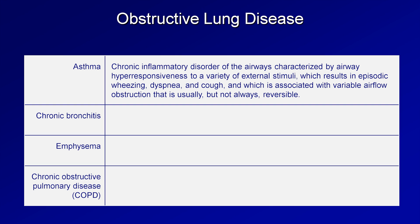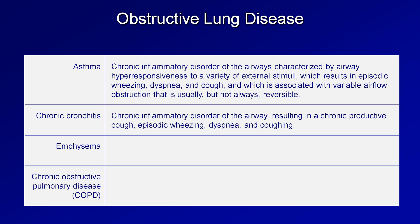How does that compare to chronic bronchitis? Chronic bronchitis is a chronic inflammatory disorder of the airway resulting in a chronic productive cough with episodic wheezing, dyspnea, and acute exacerbations of that cough, which is usually, but not always, associated with incompletely reversible airflow obstruction.